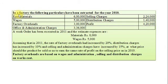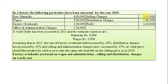Here is the question. In a factory, the following particulars have been extracted for the year 2010: Raw materials Rs. 6,00,000; Wages Rs. 5,00,000; Factory overheads Rs. 3,00,000; Office and administration charges Rs. 3,36,000; Selling charges Rs. 2,24,000; Distribution charges Rs. 1,40,000; and Profit earned Rs. 4,20,000.